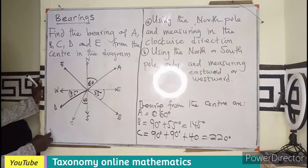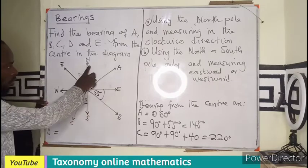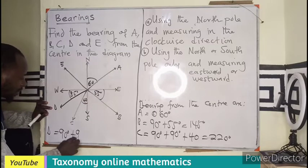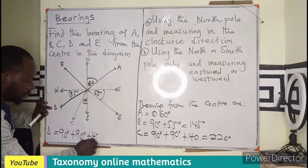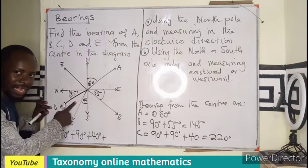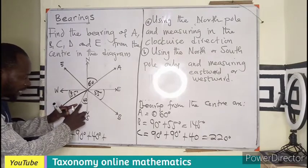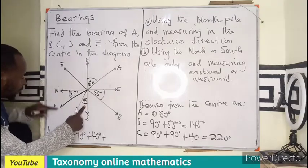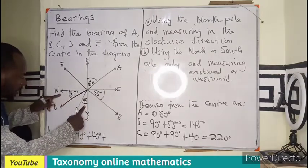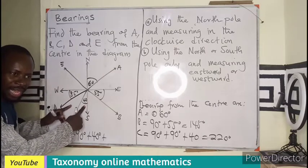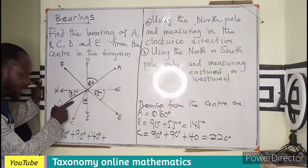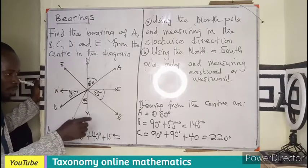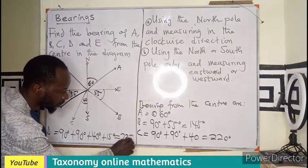For point D, continuing from point C: we have 90 plus 90 plus 40 degrees already. The remaining angle from C to west is 50 degrees, and the top portion is taken as 35, so here will be 15 degrees. Adding 15 to the previous total gives us 235 degrees for the bearing of D.